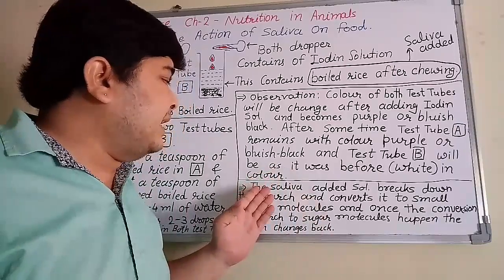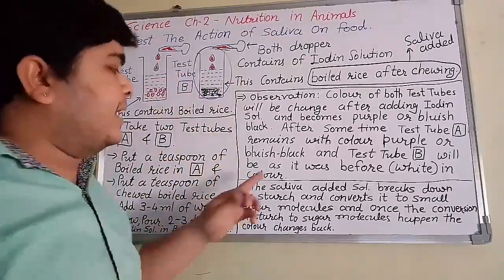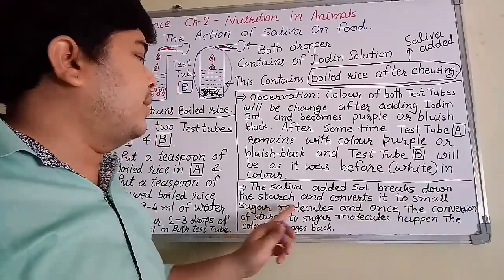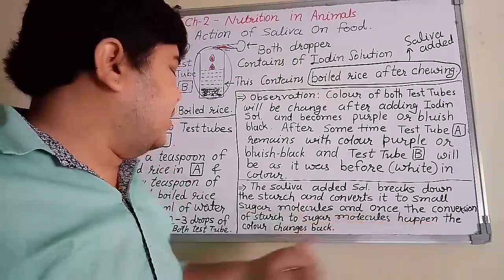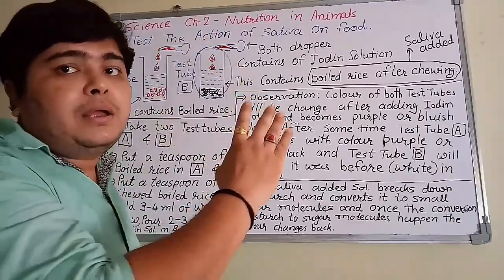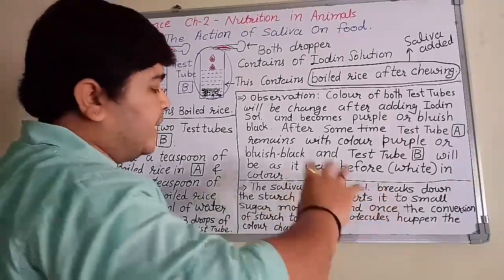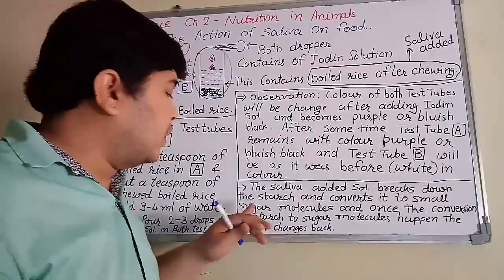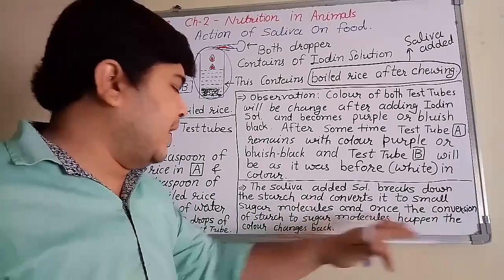So what is the meaning of this test? The saliva-added solution breaks down the starch and converts it into small sugar molecules. Once the conversion of starch to sugar molecules happens, the color changes back to white — that is why test tube B returns to its original color.